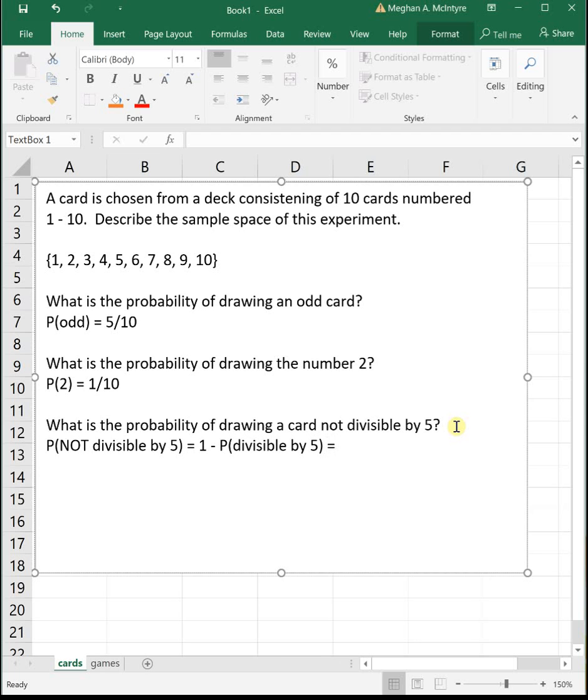And so this will make it a little bit easier, because instead of trying to figure out what are the numbers not, we just need to find the numbers that are. And the only numbers in this list that are divisible by 5 are 5 and 10. So there's 2 out of 10 that are divisible by 5. So the probability that something is not divisible by 5 is 1 minus 2 out of 10, or 1 minus the probability that they are.